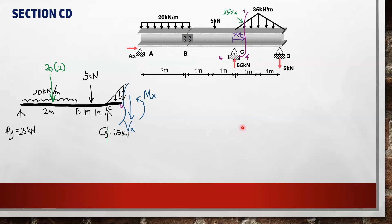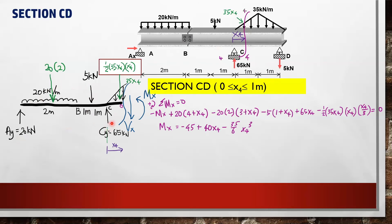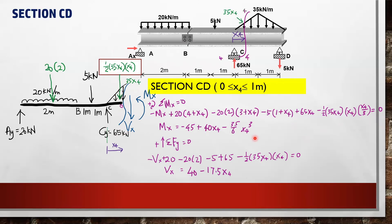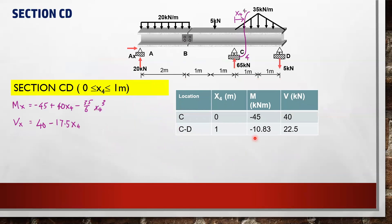For cut section 4-4, x4 starts from C. The distances of forces AY, resultant of the UDL, the 5 kN load, and CY to point O are 4 + x4, 3 + x4, 1 + x4, and x4 respectively. For the triangular loading, we determine the height at the cut section using the ratio method, giving 3/5 · x4. We determine the resultant of the triangular load as the area of the triangle, with its distance to O equal to one-third of x4. The moment and shear equations are then written, and values at C and 1 m from C for section CD are obtained.